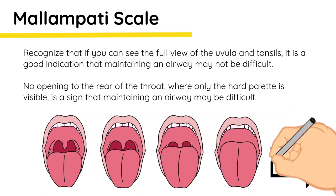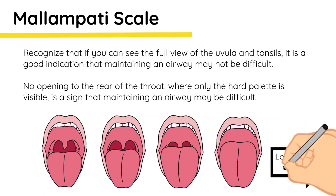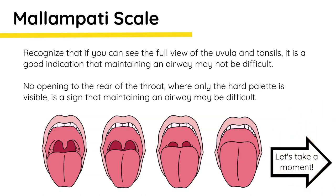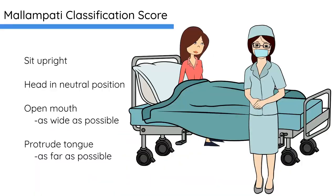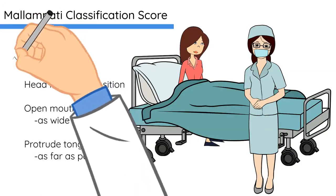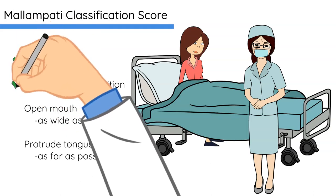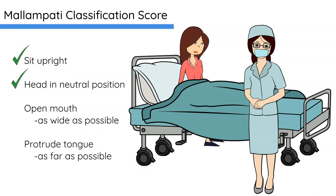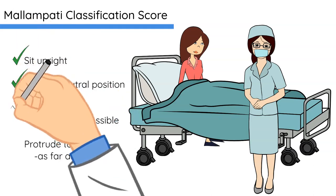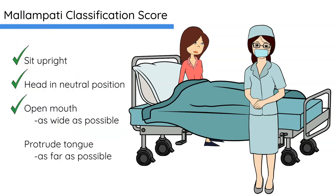To determine the Mallampati score classification, have your patient sit upright with their head in a neutral position. Ask them to open their mouth as wide as possible and to protrude their tongue as far as possible.